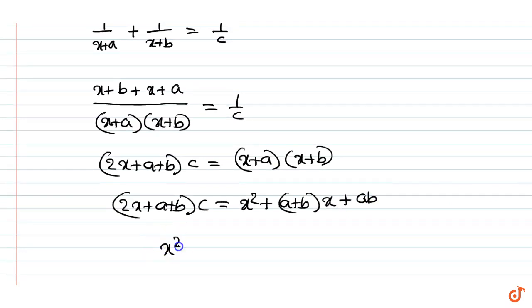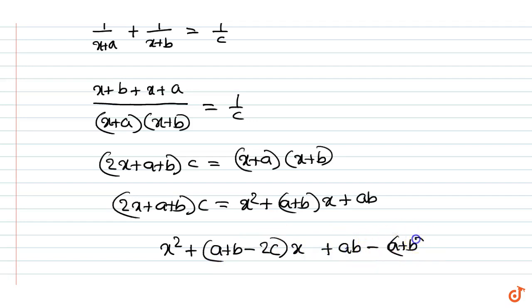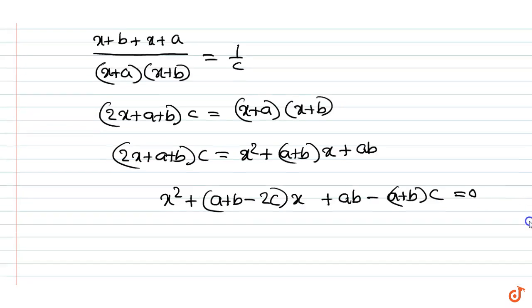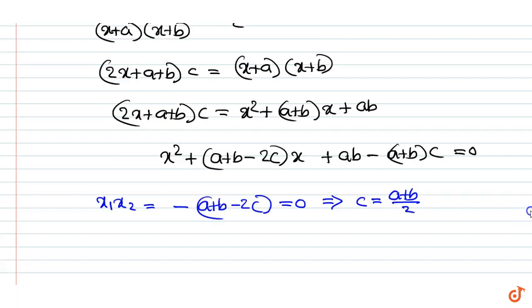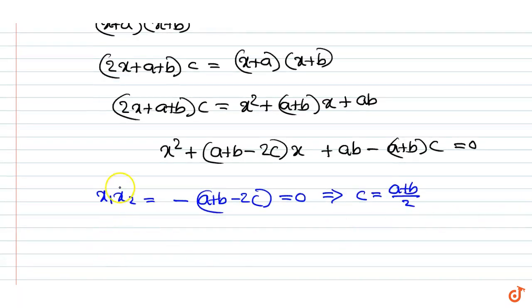We can write x² + (a+b−2c)x + ab − (a+b)c = 0. It is given that the sum of the roots is 0, that is x1 + x2 = −(a+b−2c) = 0, giving c = (a+b)/2.